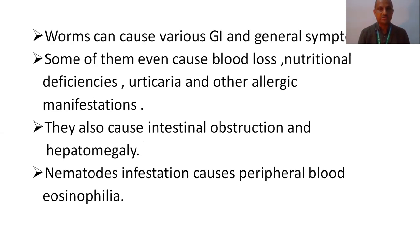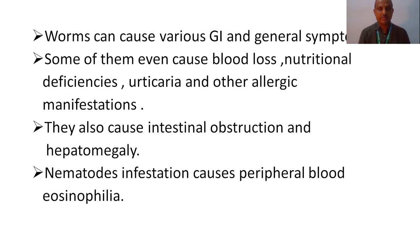These worms can cause various gastrointestinal and general symptoms, causing gastrointestinal disturbances. Some symptoms occurring with these worm infestations are blood loss, nutritional deficiencies, anemia, and some allergic manifestations. In severe conditions, it will lead to intestinal obstruction, hepatosplenomegaly, and commonly with roundworm infestation there will be peripheral blood eosinophilia. In common with roundworms, there will be bronchospasm leading to difficulty in breathing.